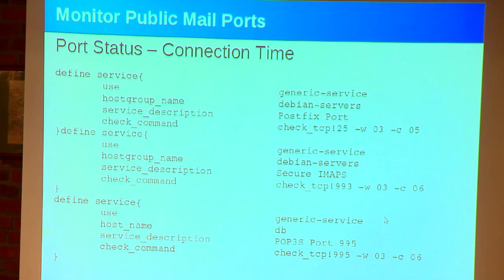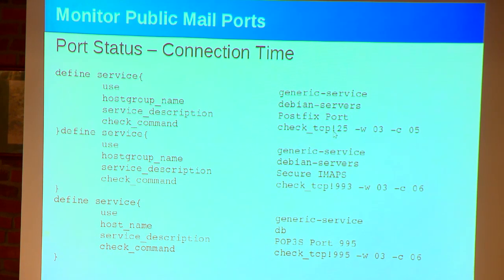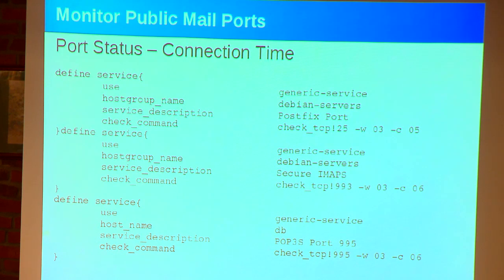Here's an example using Nagios Core. This is just public mail ports. When you look at this, here's check_tcp — this is the plugin. The exclamation mark is the delimiter between your arguments. Your first argument is a port number, 25. Then you've got your warning, 3, and your critical, 5. The one thing you don't want to do is take the configuration that you see in a book or that comes by default with Nagios. You want to think about these numbers. Is 3 seconds really a good warning time? Maybe it should be 2, or maybe over a network connection that's not so hot, maybe it should be 7. You need to test them and evaluate them so you're making intelligent decisions.